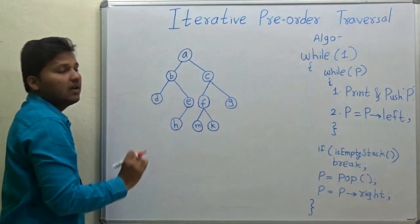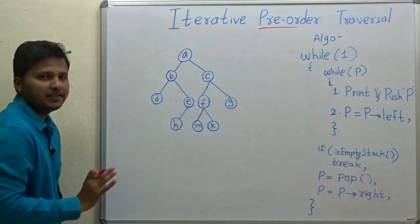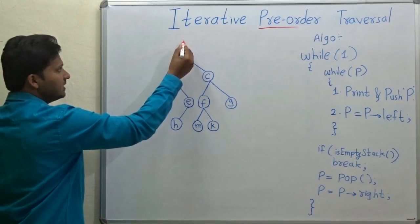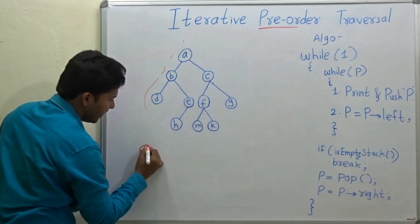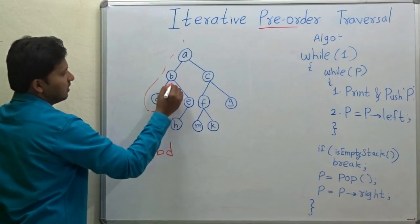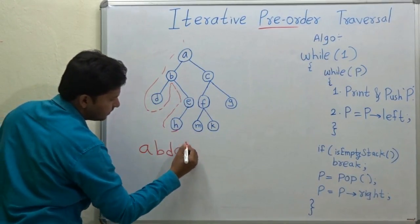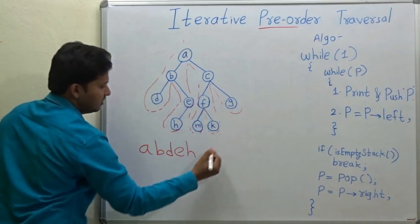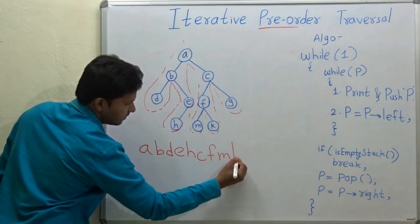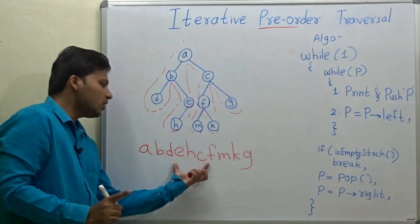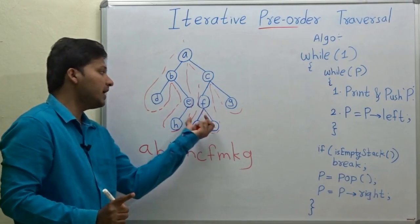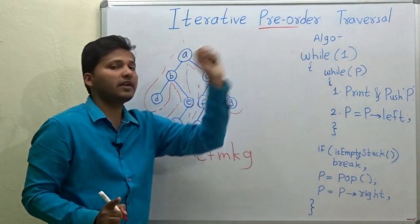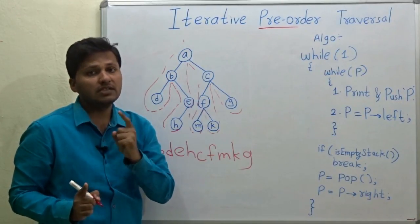This is the binary tree. Let's first print the pre-order traversal. This is the root. The pre-order traversal is: a, b, d, e, h, then c, f, m, k, and g. If you don't know how to find the pre-order traversal of a binary tree, watch my previous videos on the shortcut method — the link is in the description below.